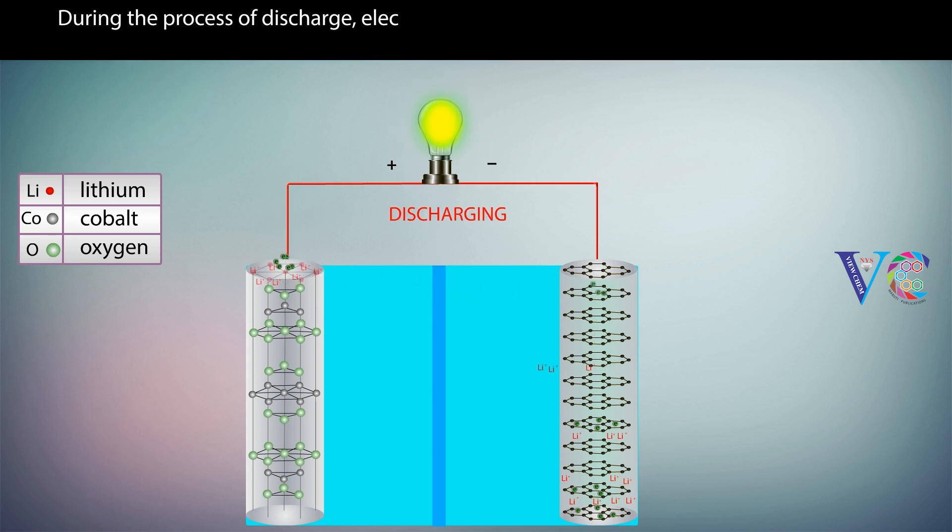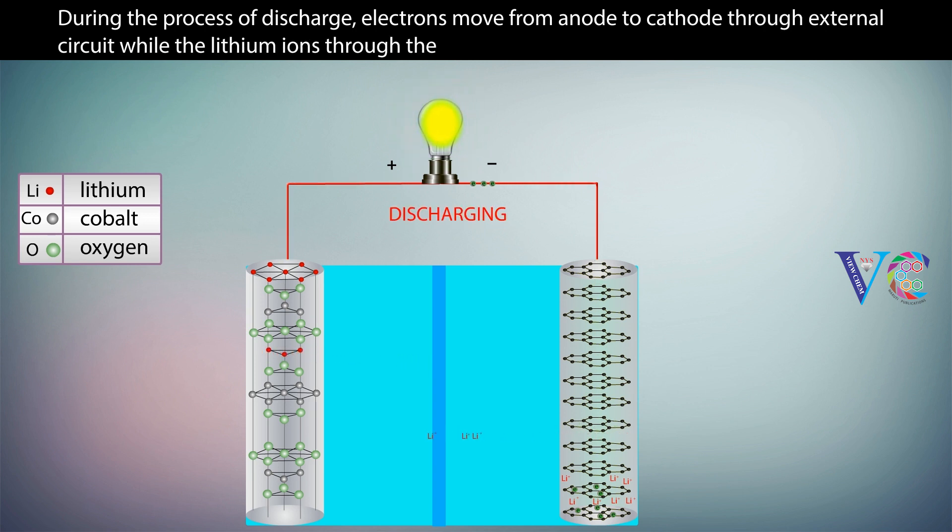During the process of discharge, electrons move from anode to cathode through external circuit, while the lithium ions through the electrolyte.